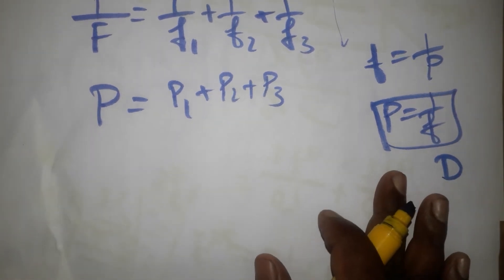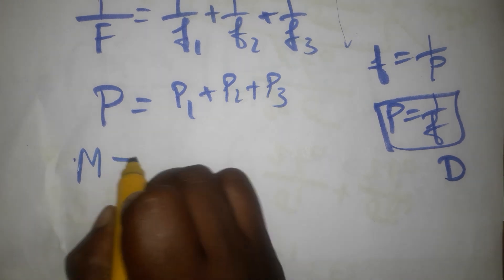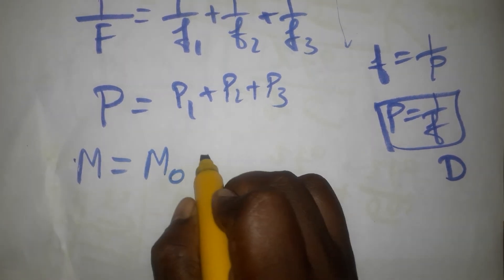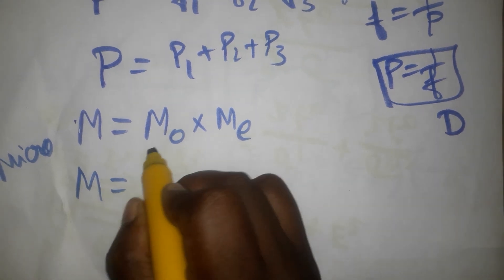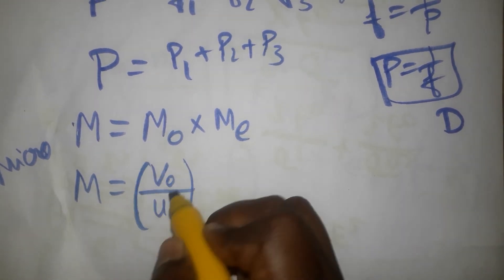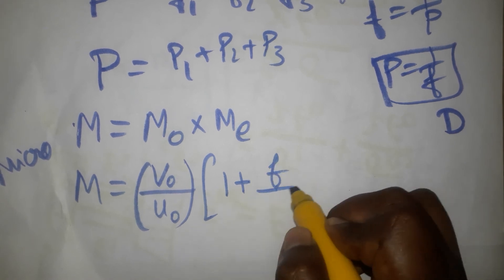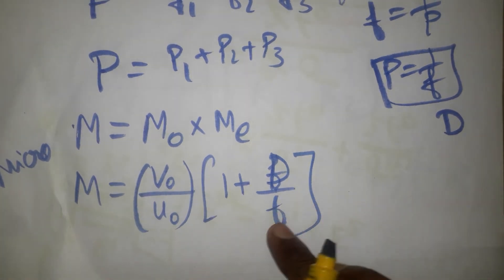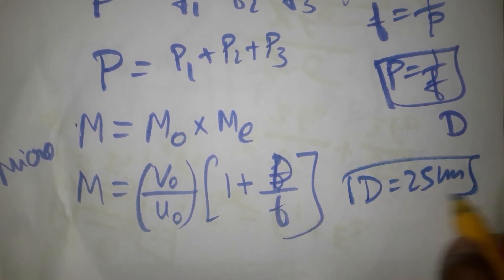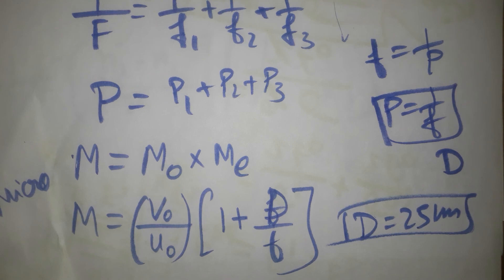For microscopes and telescopes, the total magnification equals the magnification of the objective lens multiplied by the magnification of the eye lens. For a microscope: M = (v₀/u₀) × (1 + D/f), where D is the least distance of distinct vision, always taken as 25 cm. These are the important formulas in ray optics — very helpful for your board exam. Thank you for watching; please subscribe.